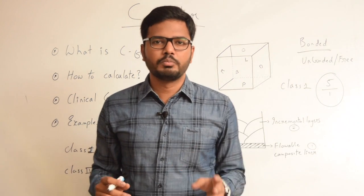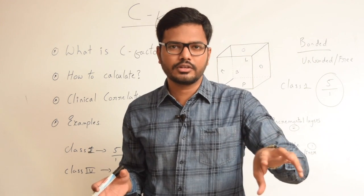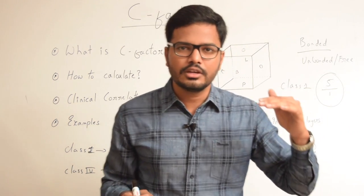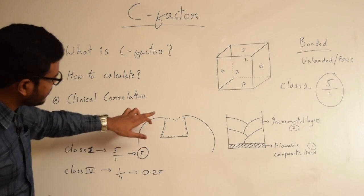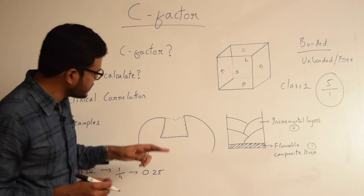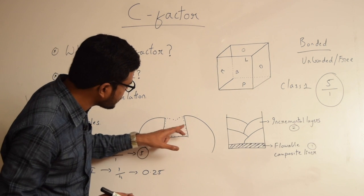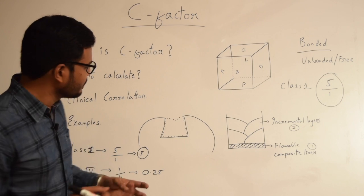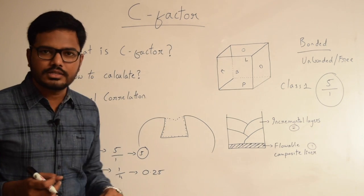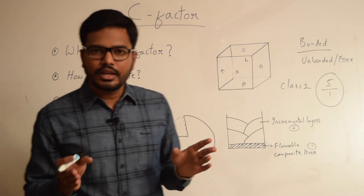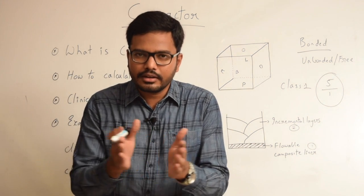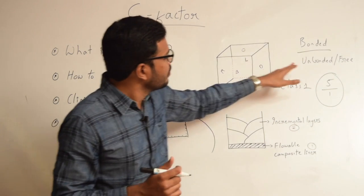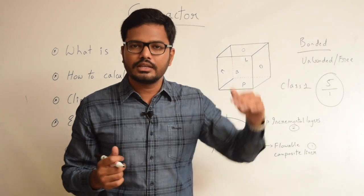Understanding C-factor is very important. To summarize: it gives us the configuration factor of a particular prepared cavity, and it's calculated by dividing the number of bonded surfaces by the number of unbonded surfaces. Clinically, the greater the bonded surfaces, the greater the potential for bond disruption because of stress generation. C-factor gives us an idea of the stress that can be generated in a cavity. It is also related to the width of the cavity — the wider the cavity, the lesser the C-factor, because more unbonded or free surface is present.